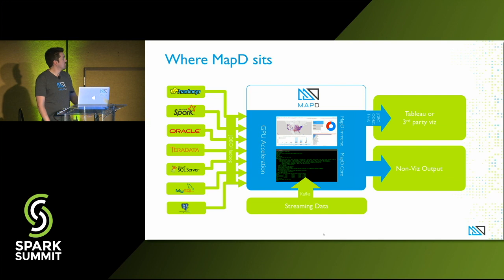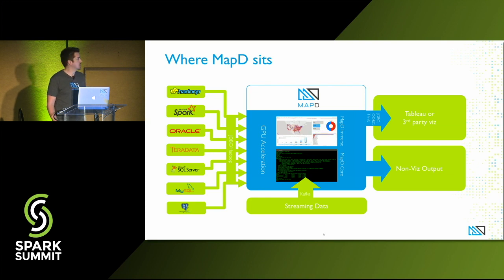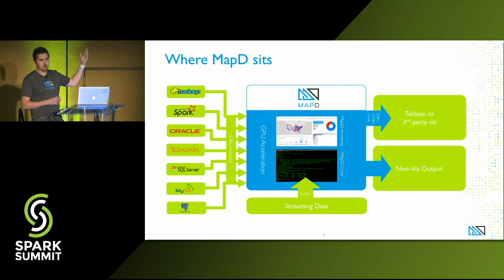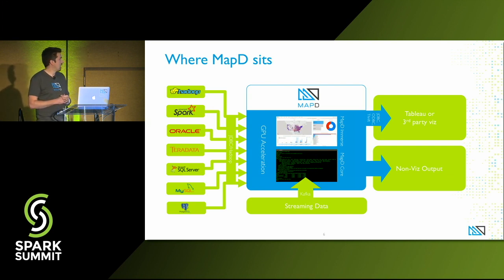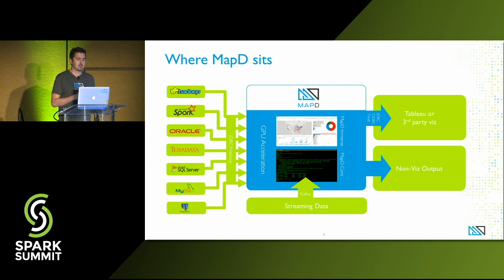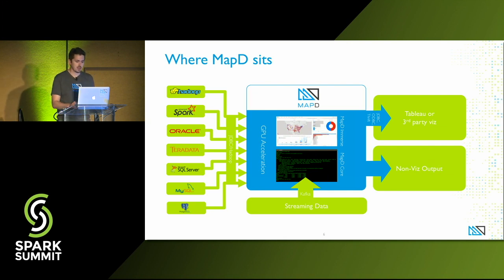Where does MapD sit in the overall ecosystem? MapD can be your store of record — it is a persistent store that persists data on disk. It's often used as a cache or supercharger on another system, like Hadoop or Spark. You can pull in streaming data via Kafka. Once it's in MapD, it's going to be hyper-fast. You can push it out to third-party viz tools like Tableau, use it for real-time programmatic queries — people looking for fraud or anomalies — or leverage MapD Immerse, which works hand-in-glove with our backend.